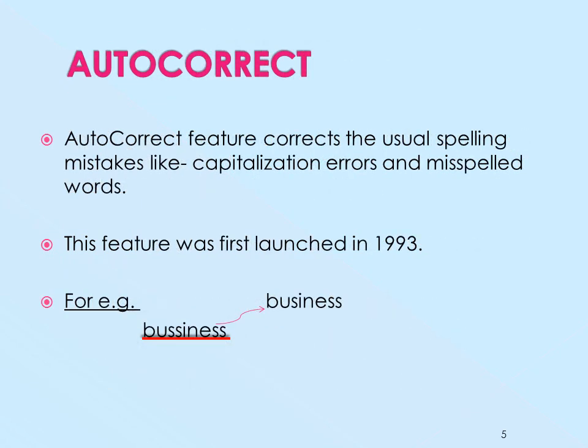Autocorrect feature. The autocorrect feature corrects usual spelling mistakes like capitalization errors and misspelled words. As the name suggests, autocorrect means automatically correcting something. This feature was first launched in the year 1993. For example, the red underlined word spelled B-U-double-S-I-N-E-double-S is wrong, and the computer will automatically correct it to the correct spelling B-U-S-I-N-E-double-S.